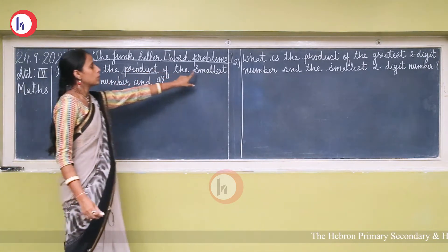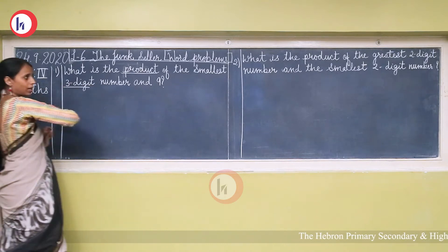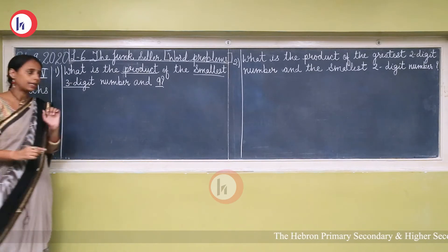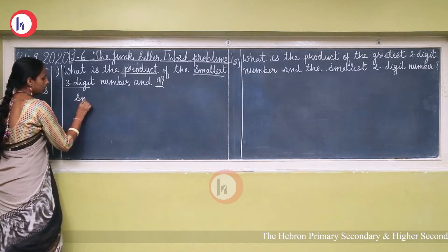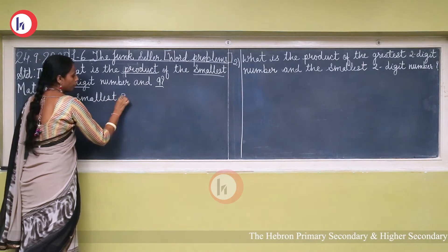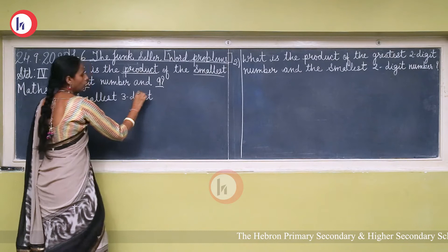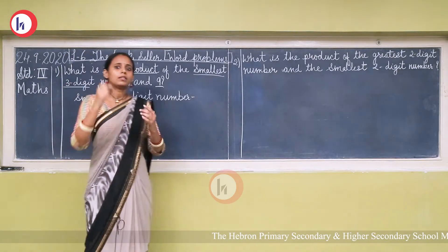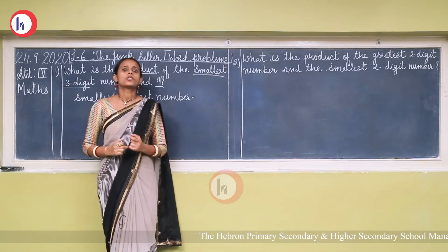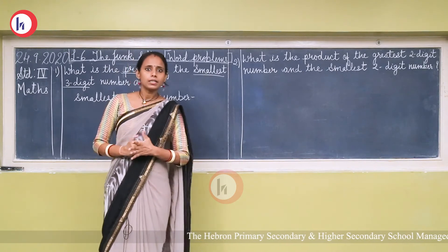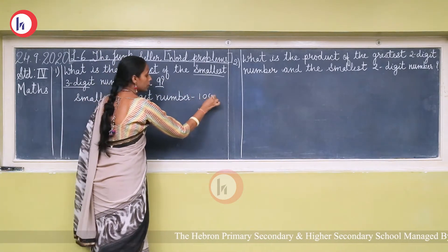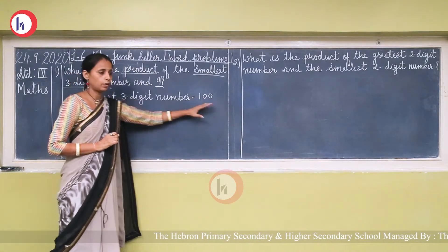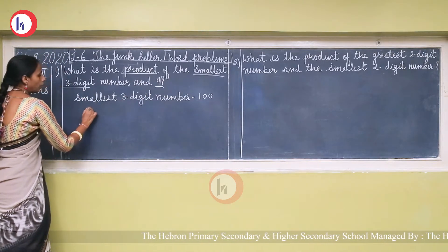So we need to find: smallest three-digit number multiplied by nine. What is the smallest three-digit number? The smallest one-digit number is 1, the smallest two-digit number is 10, and the smallest three-digit number is 100 — it has three digits and is the smallest three-digit number.